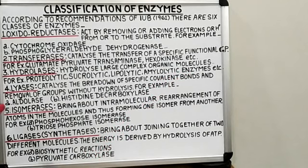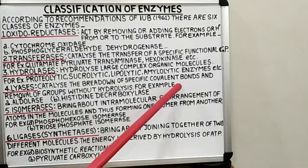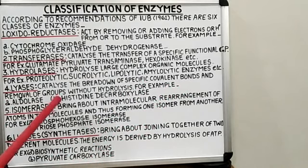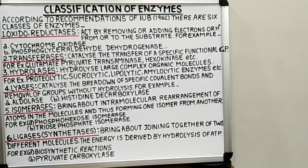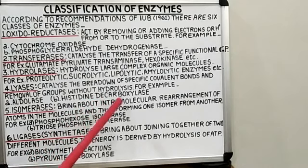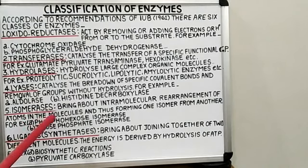The next class includes lyases. These enzymes catalyze the breakdown of specific covalent bonds and removal of groups without hydrolysis. For example, aldolases split fructose-1,6-diphosphate into dihydroxyacetone phosphate and 3-phosphoglyceraldehyde. Similarly, histidine decarboxylases break the covalent bond between a carbon atom and histidine, forming CO2 and histamine.